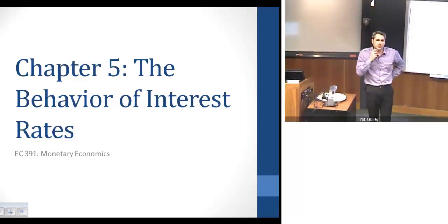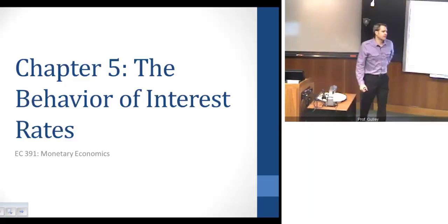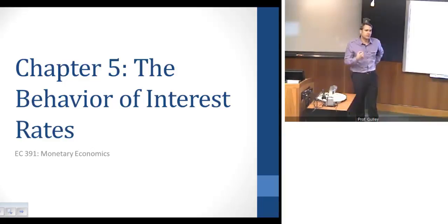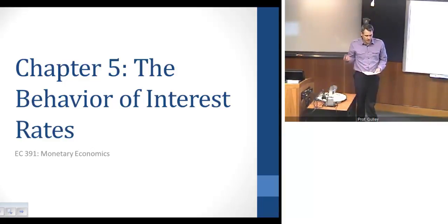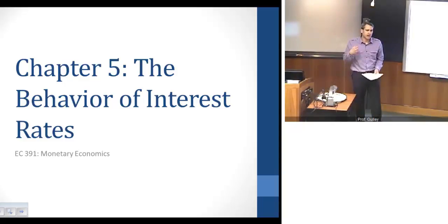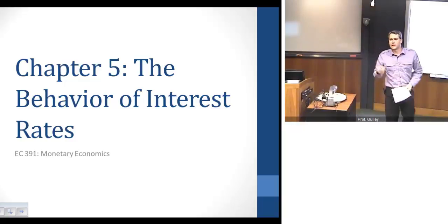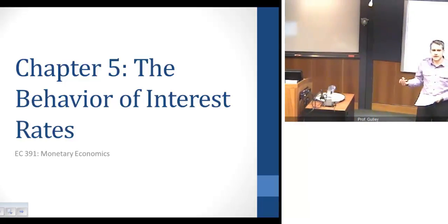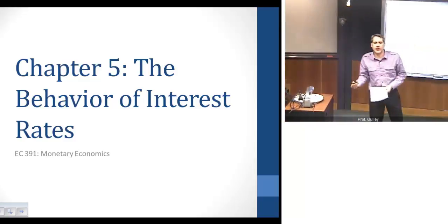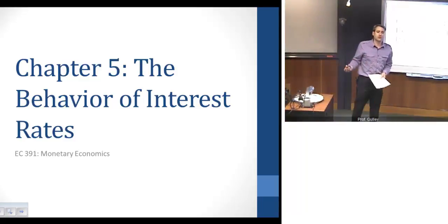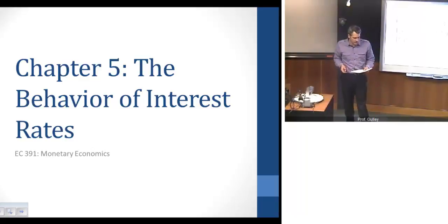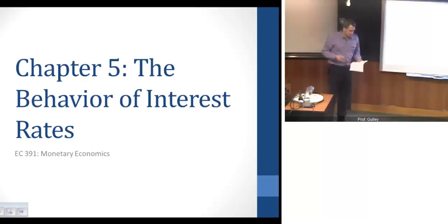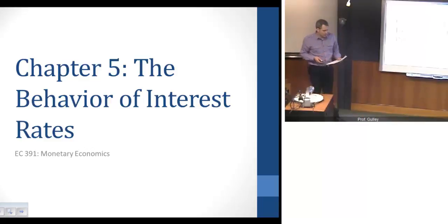Welcome. We're going to talk about the bond market today. This is Chapter 5 of Michigan's Money and Banking Text. The main questions of interest are really looking at the basics of the bond market — both the supply side and the demand side — understanding the shape of the bond supply and bond demand functions, why they slope the way they do, looking at the equilibrium effects, and how changes in those equilibrium occur.